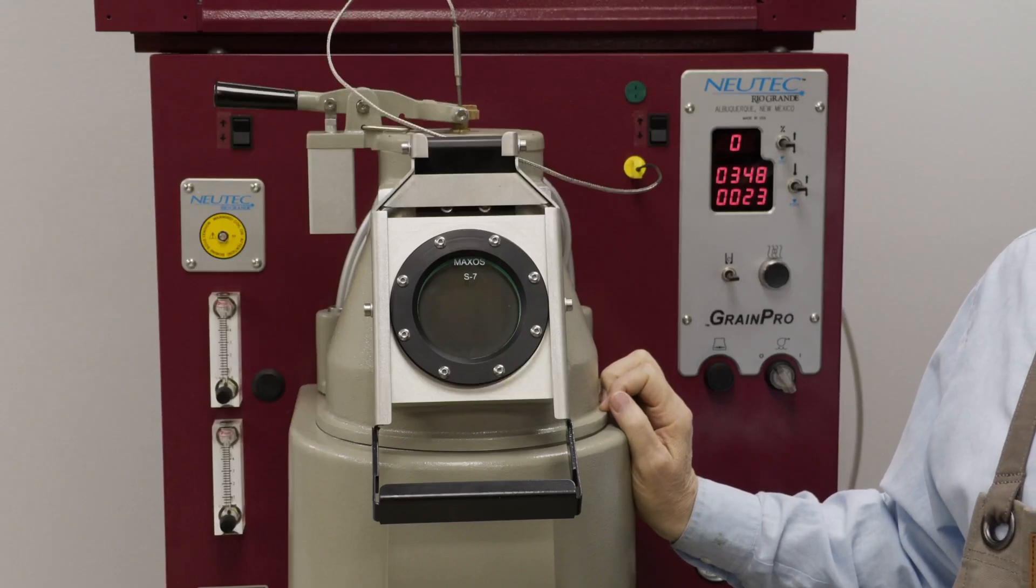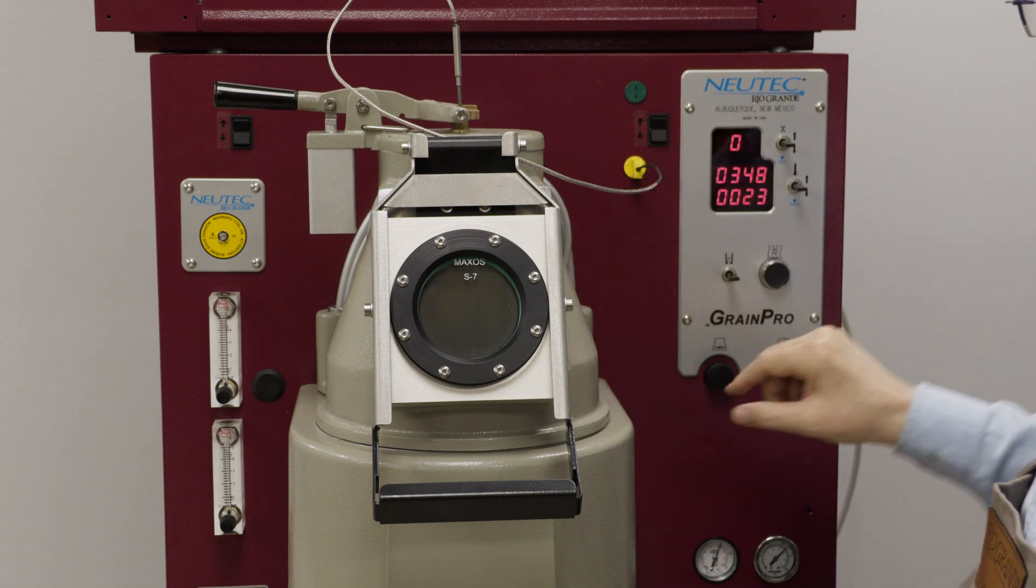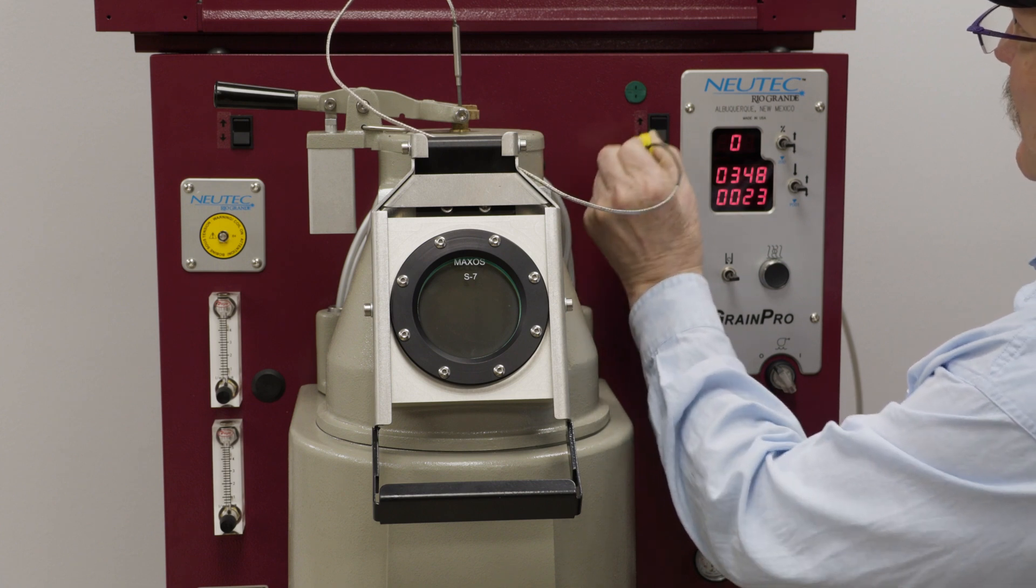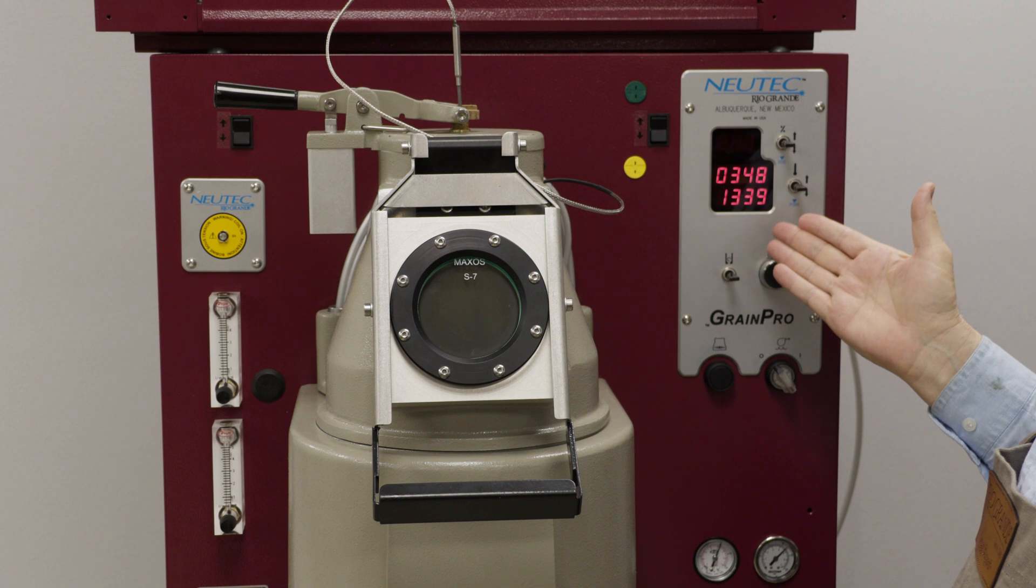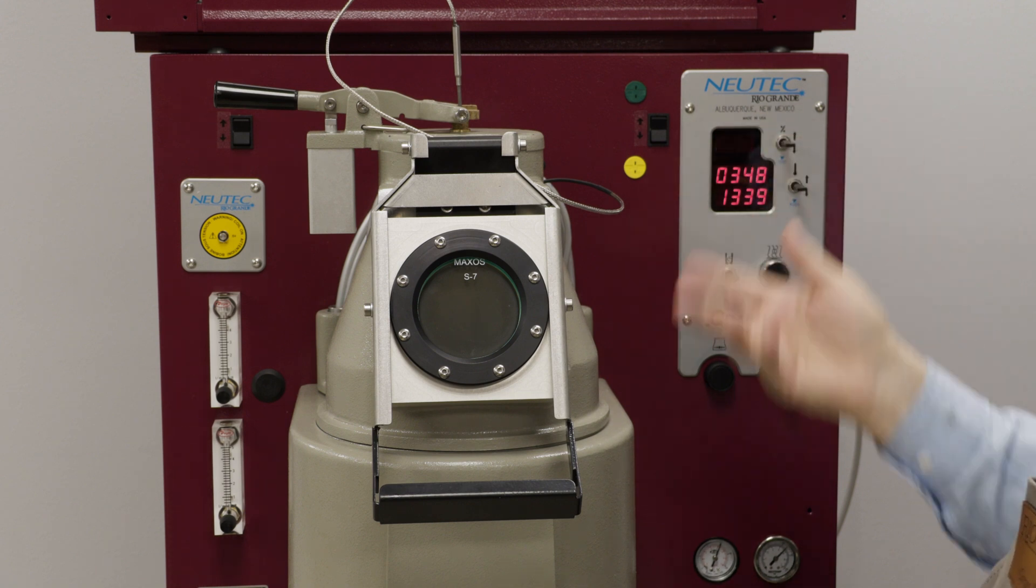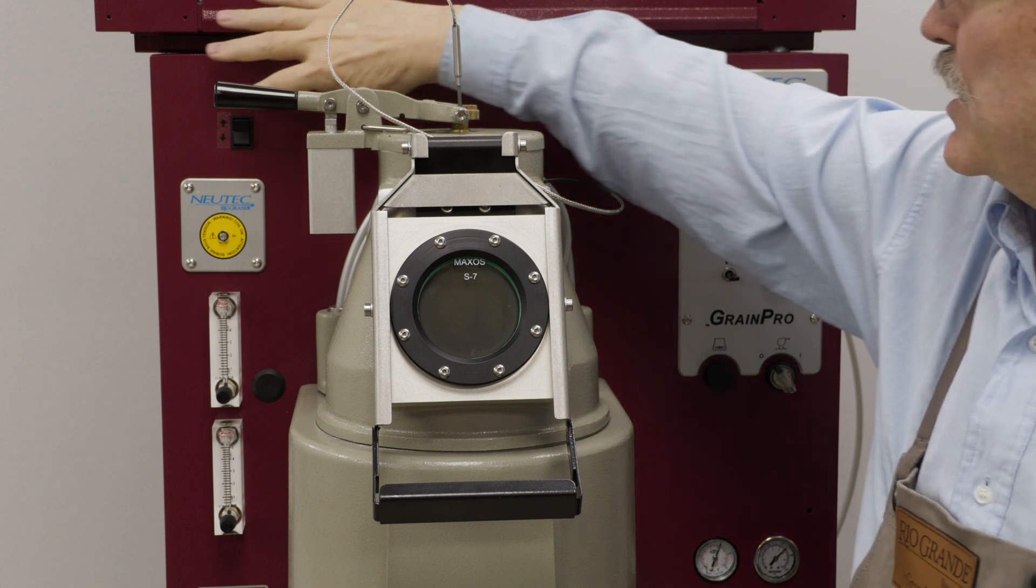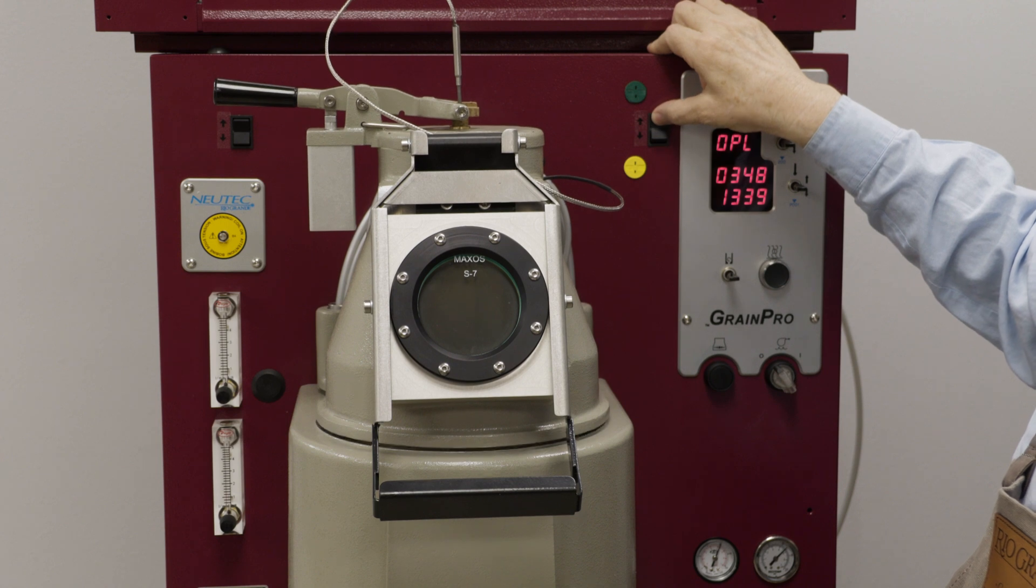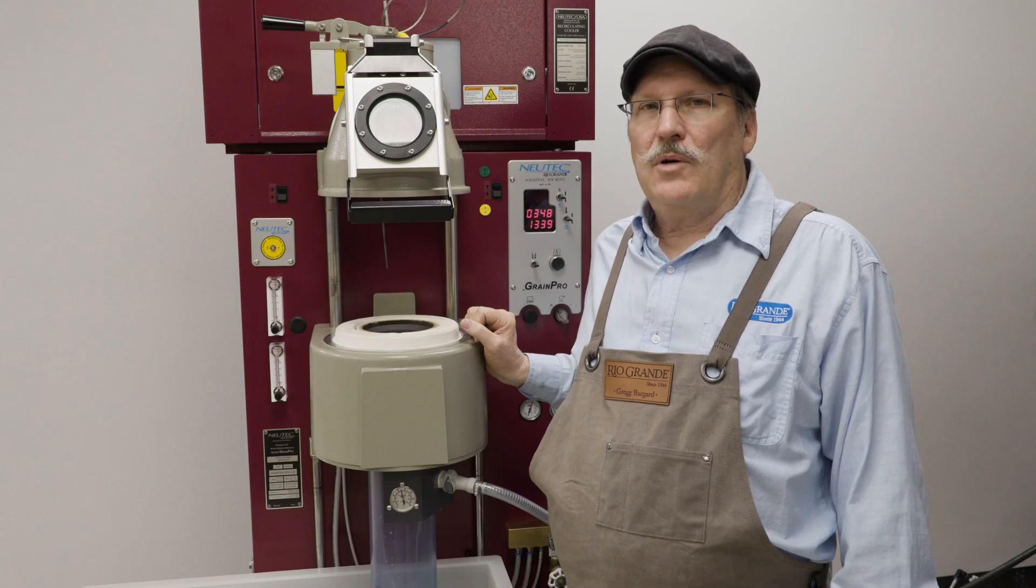Now let's get into the crucible chamber. Before we do that, I'm going to unplug the thermocouple so it doesn't get stretched when we lift it up. When I unplug it, the display will change because now it's an open circuit. Then we can lift it up. You can use either button on either side and we're going to go all the way up.